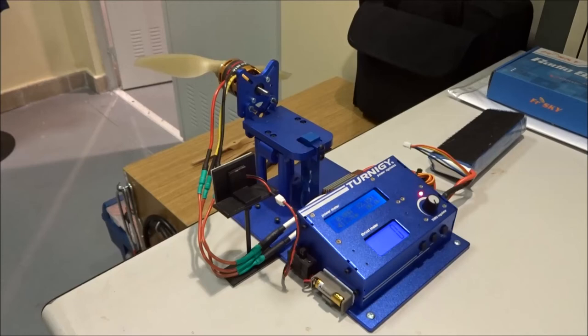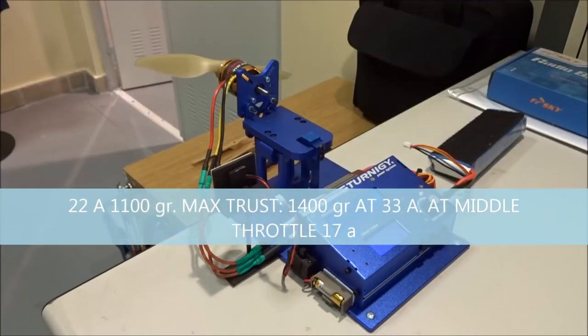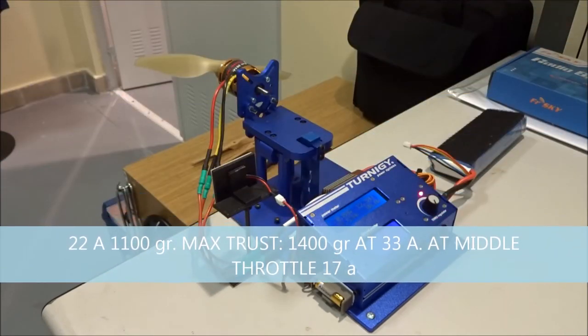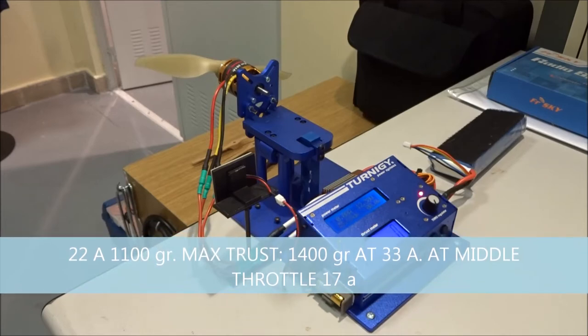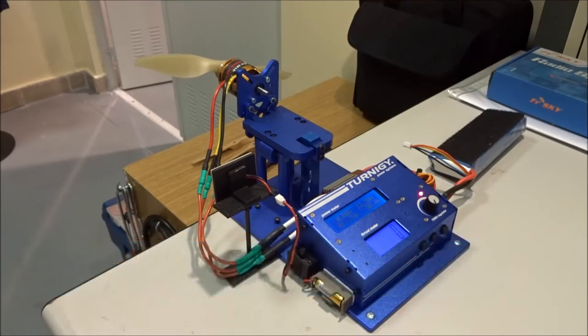At the end of the test I will give you a chart with the type of propeller, the pitch and the diameter and the result. This one goes much better. In this case we've got 4 amps less than in the case of the other motor and we get more than 1 kilogram of thrust with only 24 amps.